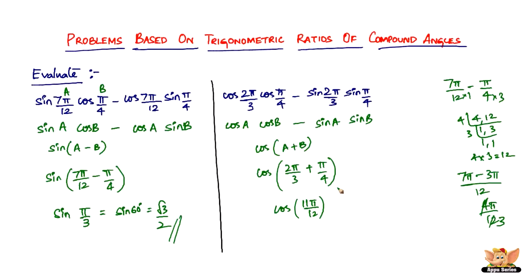Right, so cos of 11π by 12 is 11 times 180 divided by 12 which is cos of 165 degrees. Now quickly use the other concepts. So cos of 165 can be written as 180 degrees minus 15 degrees, right?